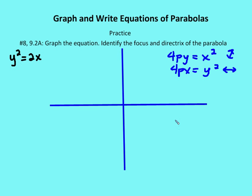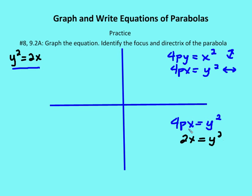Let's fill in the values for p, and once we have the value for p, we can figure out where the focus and directrix are. I have 4px is equal to y squared as my formula, and I need to relate it to y squared is equal to 2x. So 2x is equal to y squared. What value of p makes these statements the same? We can see that p must be one half, because 4 times one half times x is equal to y squared is the same as 2x is equal to y squared. So p is equal to one half.